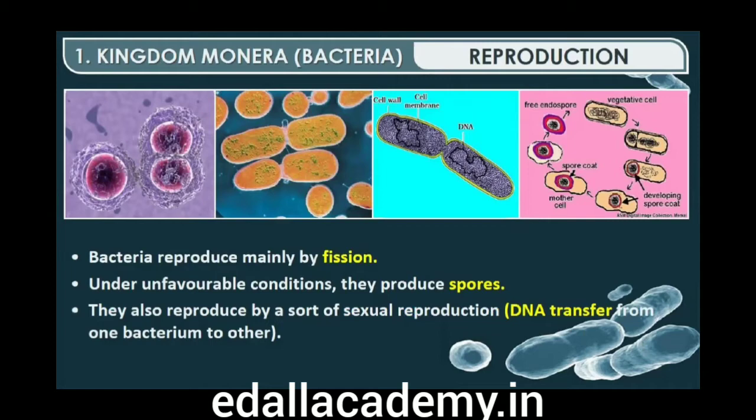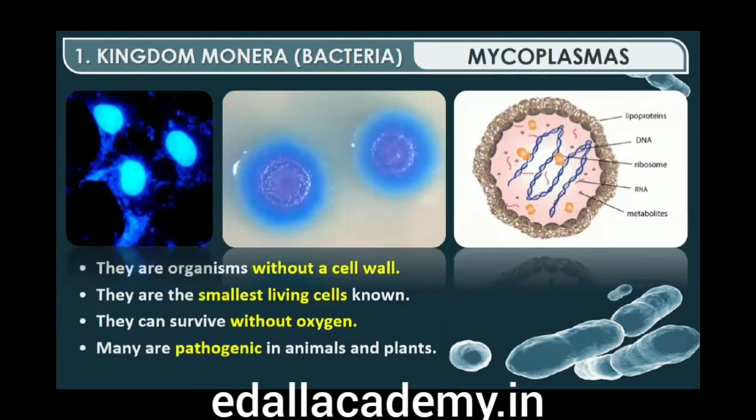The mycoplasma are organisms that completely lack a cell wall. They are the smallest living cells known and can survive without oxygen. Many mycoplasma are pathogenic in animals and plants.